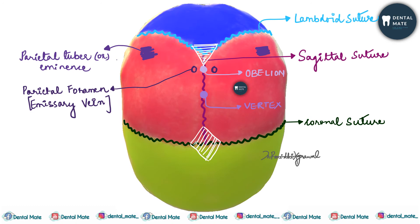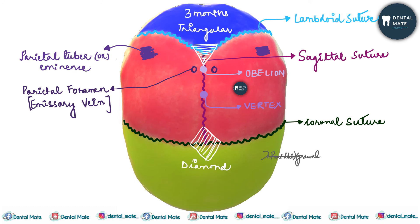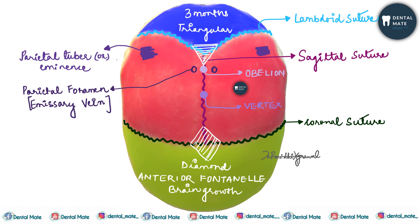The posterior fontanelle closes at birth to two to three months of age and is triangular in shape. The anterior fontanelle is diamond in shape and closes at 18 to 24 months of age. It is required for the growth of the bone.